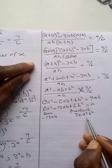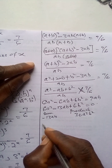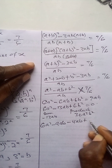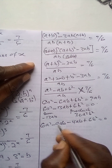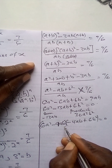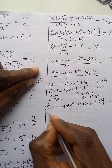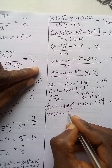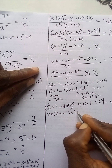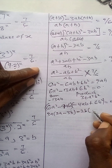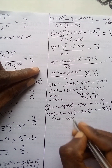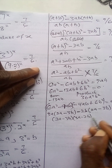So we write: 6a squared minus 9ab minus 4ab plus 6b squared equals 0. Note that 9ab minus 4ab gives 13ab, consistent with our sum. Grouping: the common factor in the first pair is 3a, giving 3a times 2a minus 3b. The common factor in the second pair is minus 2b, giving minus 2b times 2a minus 3b. So we have 2a minus 3b times 3a minus 2b equals 0.